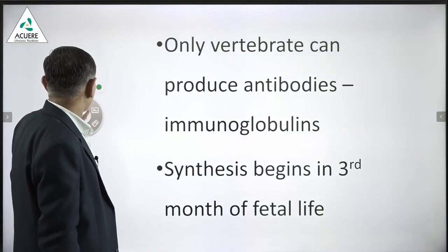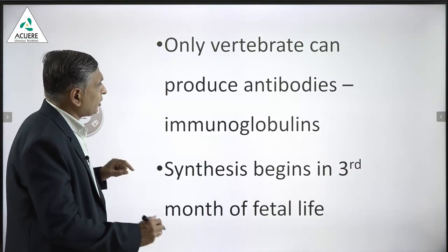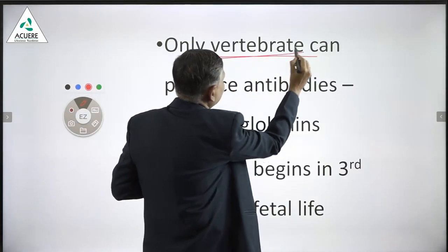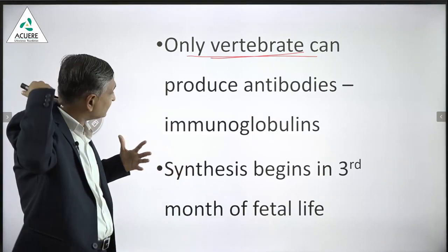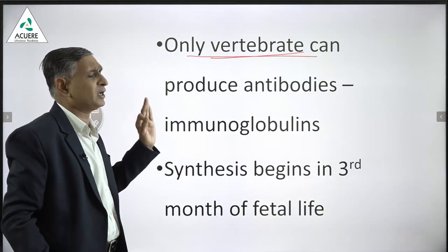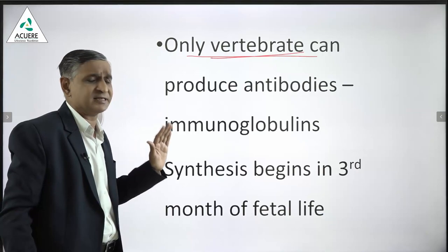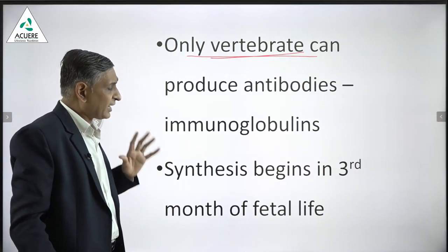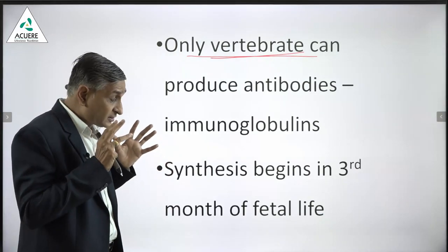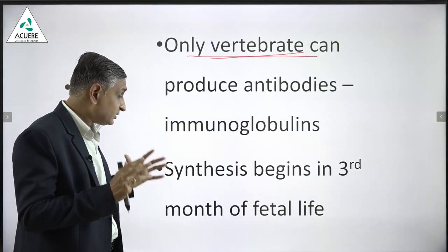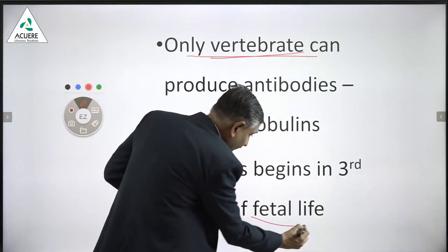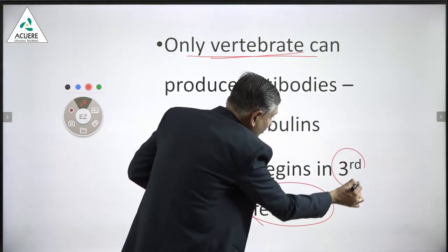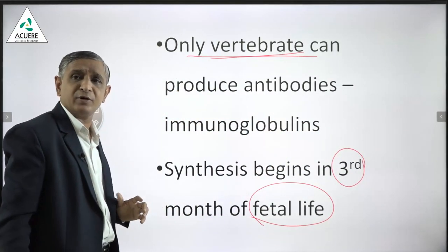There are two important points. First, only vertebrate animals — those having a spinal cord — can produce antibodies; lower organisms do not. Second, the synthesis of antibody starts in fetal life, at about the third month of intrauterine life.